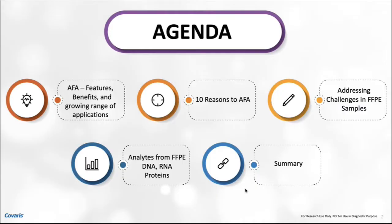So without further ado, here's the agenda I'd like to follow. For those new to AFA, I'll go over what AFA is, its features and benefits, and why AFA is becoming the go-to technology for sample preparation for a huge number of laboratories. Then I'll jump into FFPE samples, highlighting the challenges. I'll share data on extraction and purification of DNA, RNA, and proteins, concluding with a summary of what products make it happen.